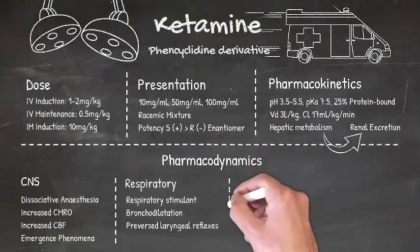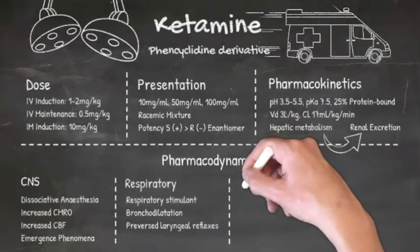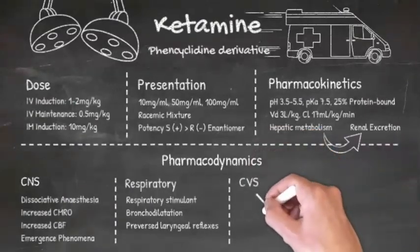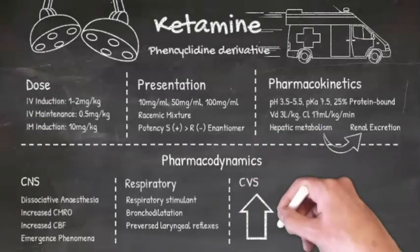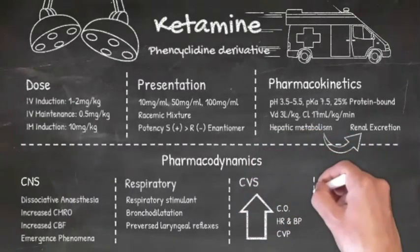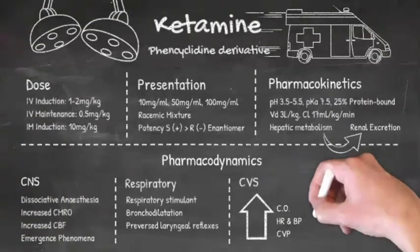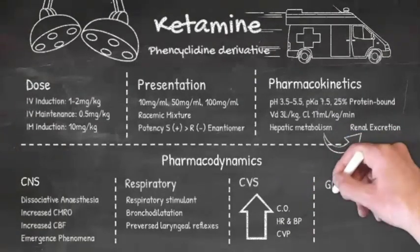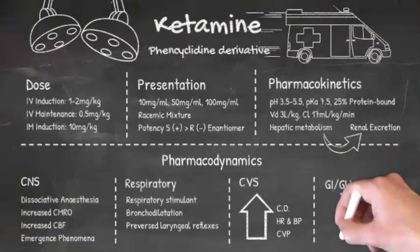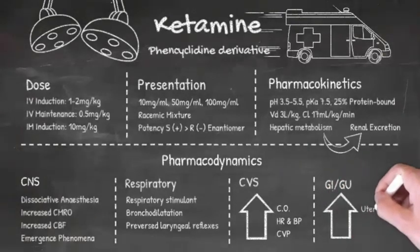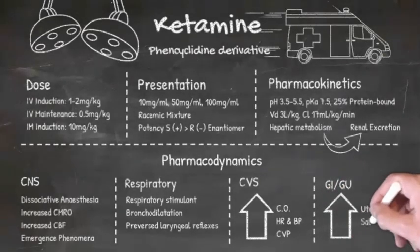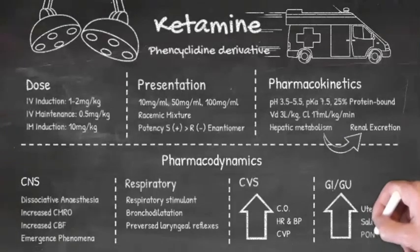Due to its sympathomimetic effects, ketamine increases cardiac output, heart rate, and blood pressure. The central venous pressure is also raised. Grouping gastrointestinal with genitourinary effects: uterine tone, oral secretions, and the risk of post-operative nausea and vomiting are all increased.